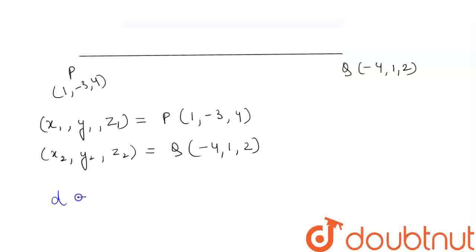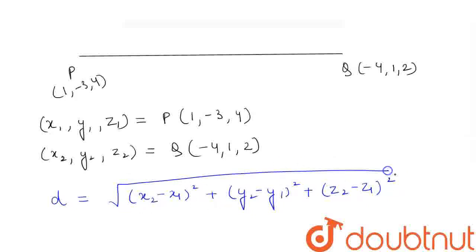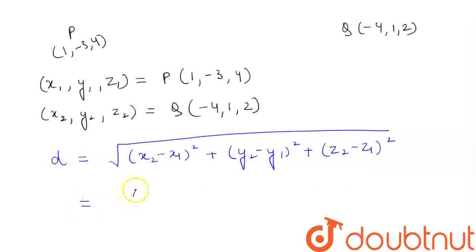we have the distance formula, which is that the distance between two points is given by the square root of x2 minus x1 whole square plus y2 minus y1 whole square plus z2 minus z1 whole square. So, if we put the values, we will get this equal to the square root of minus 4 minus 1 whole square plus 1 minus minus 3 whole square plus 2 minus 4 whole square.